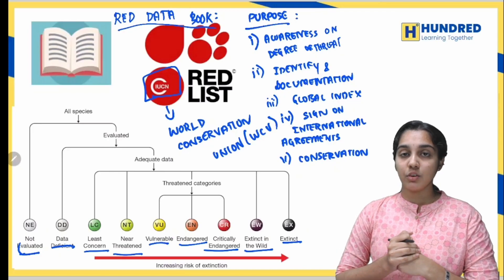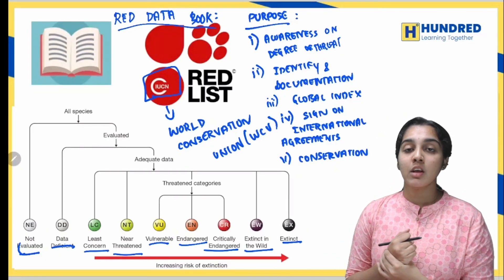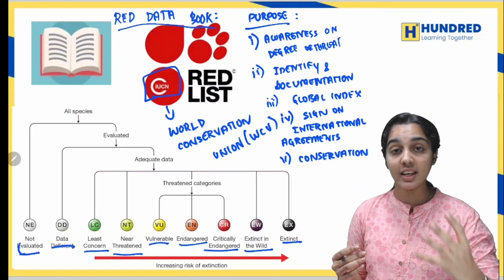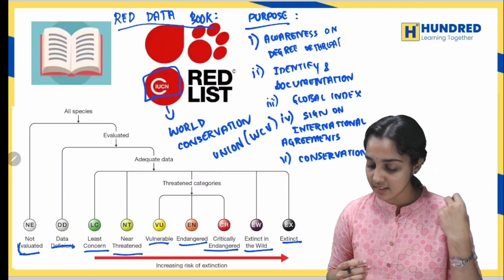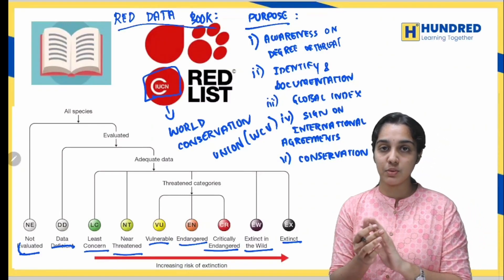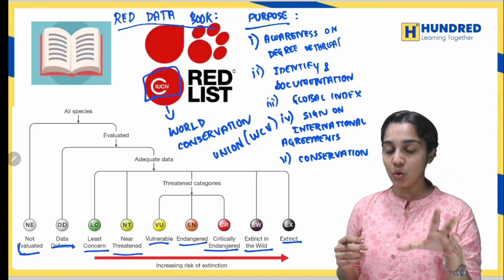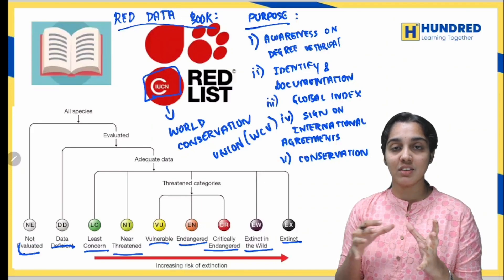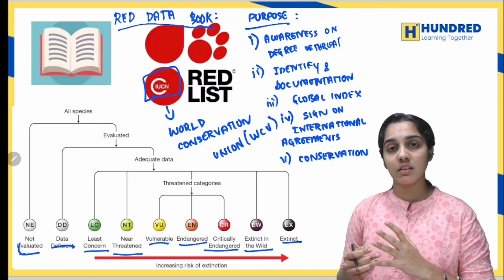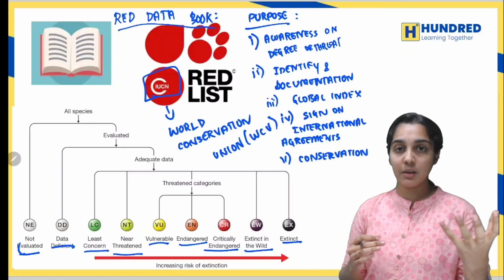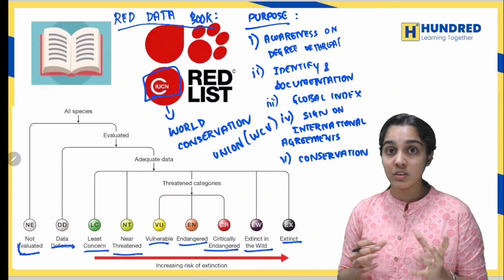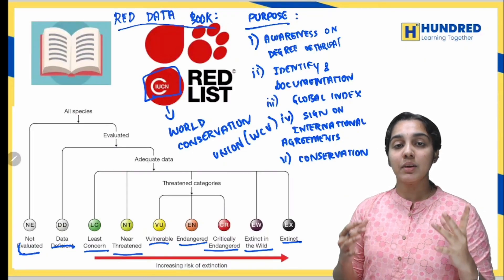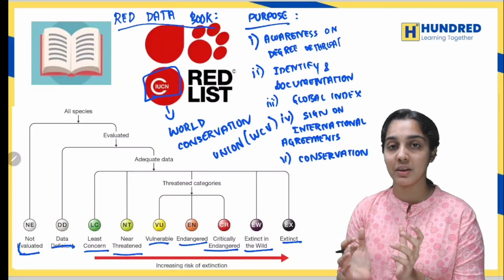Explaining the purposes: First, creating awareness — awareness on the degree of threat to biodiversity, how fast species are getting extinct. Third, the global index — biodiversity loss is not just one country's problem but many countries' problem, so a global index is created about biodiversity status. Fourth, signing international agreements — all countries should participate in biodiversity conservation agreements.